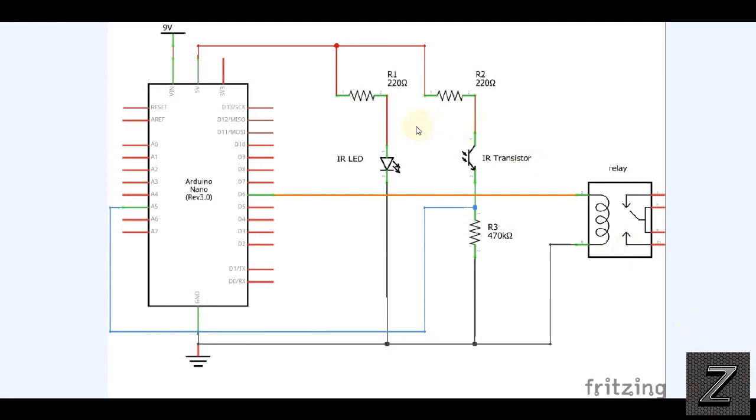All right, I've got the schematic brought up here. So let's just get right into it. Well, of course, we got our Arduino board here and I'm using the Nano, but like I said, you can use any Arduino board. This is going to work with any of them. Now, we got our IR LED and IR transistor, our infrared LED and transistor. And I'm using the 220 ohms on both of them as the current limiter because they will not handle the full five volts.